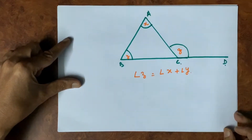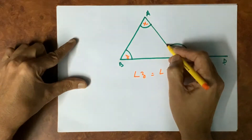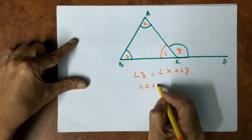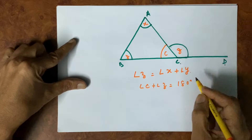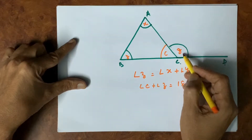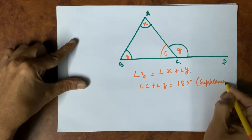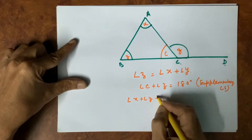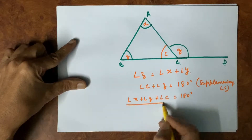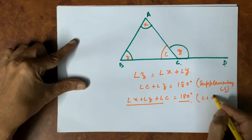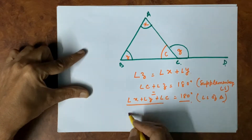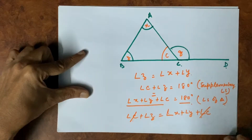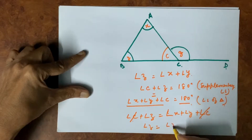This is very simple to prove. Let us name the interior angle at C as angle C. Angle C plus angle Z is equal to 180 degrees — these are supplementary angles on a straight line. Similarly, angle X plus angle Y plus angle C equals 180 degrees, since these three angles are angles of a triangle. Since both expressions equal 180 degrees, angle C plus angle Z equals angle X plus angle Y plus angle C. Cancelling angle C, we get angle Z equals angle X plus angle Y.